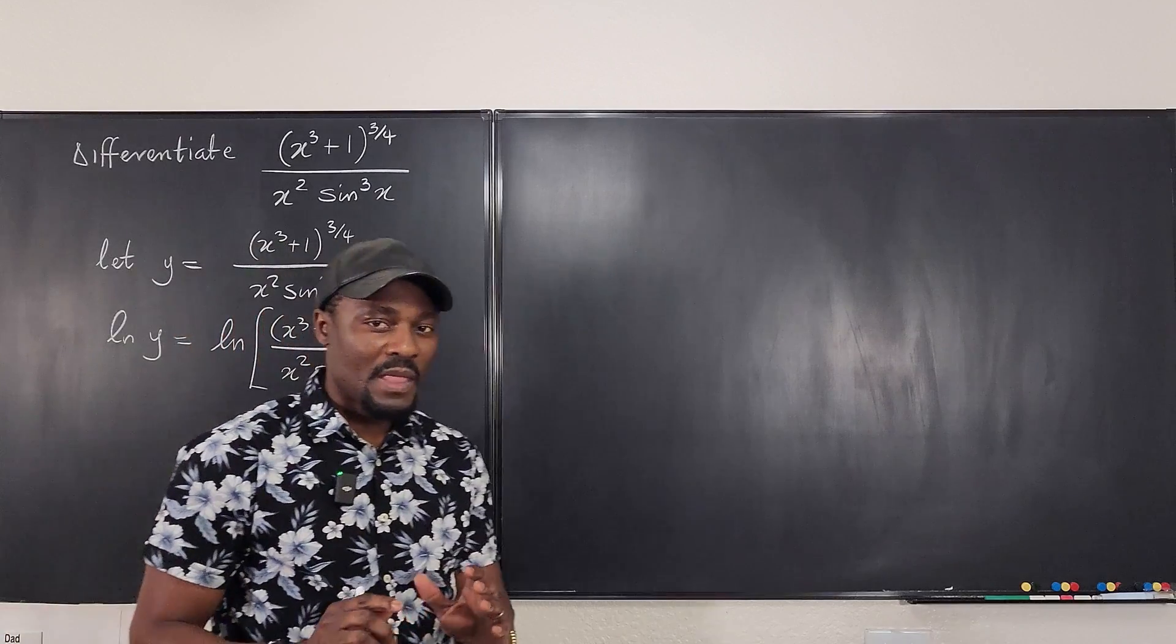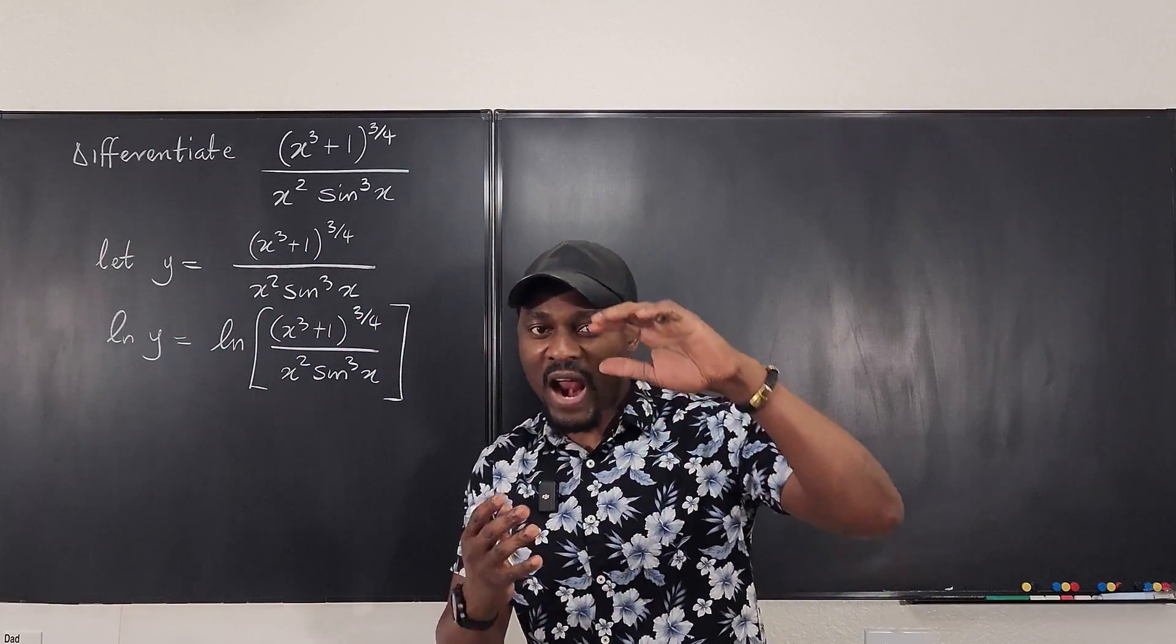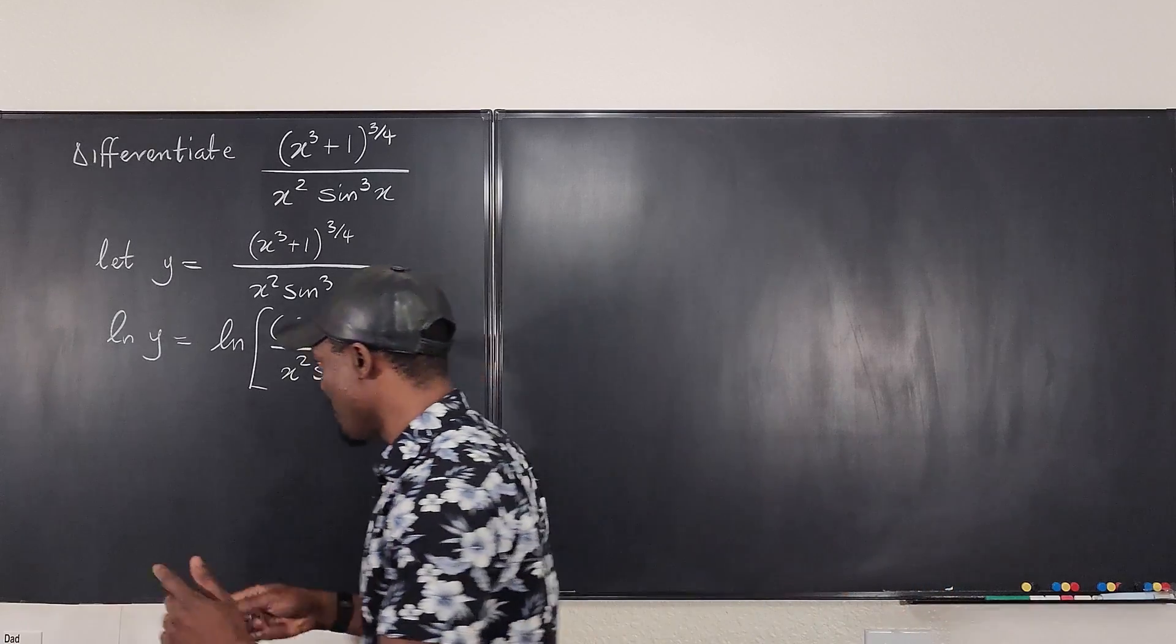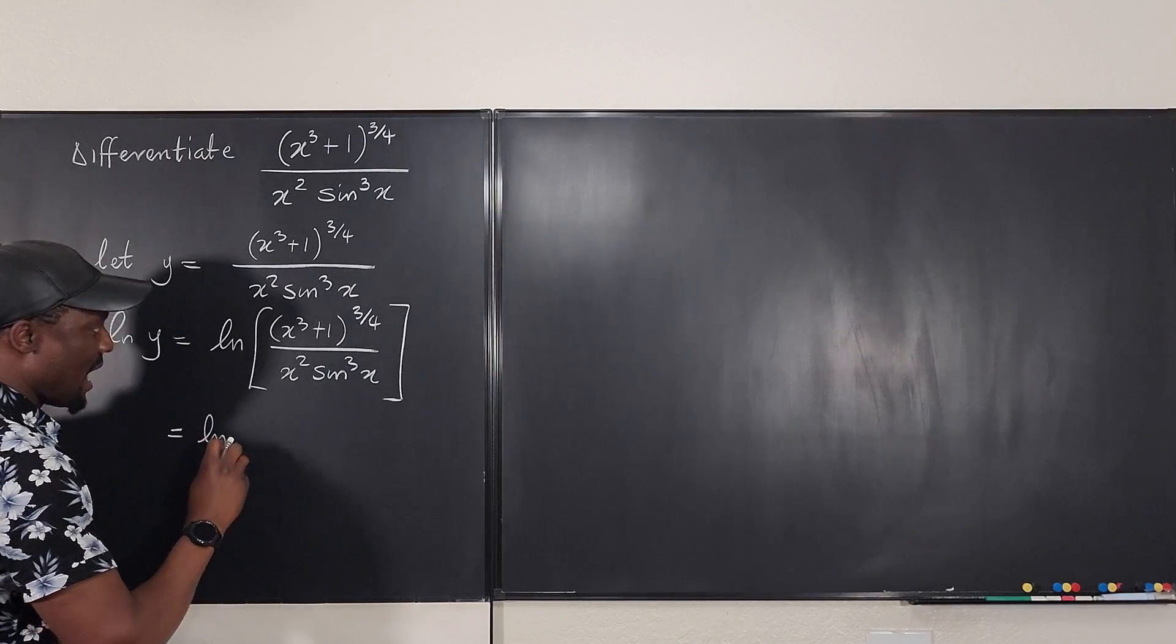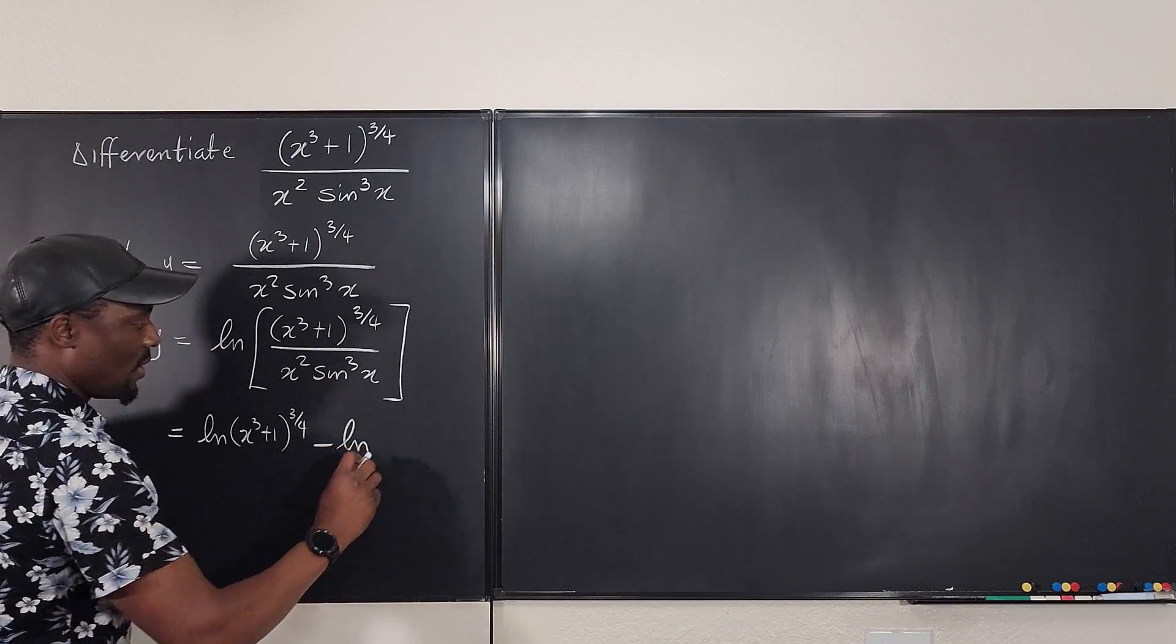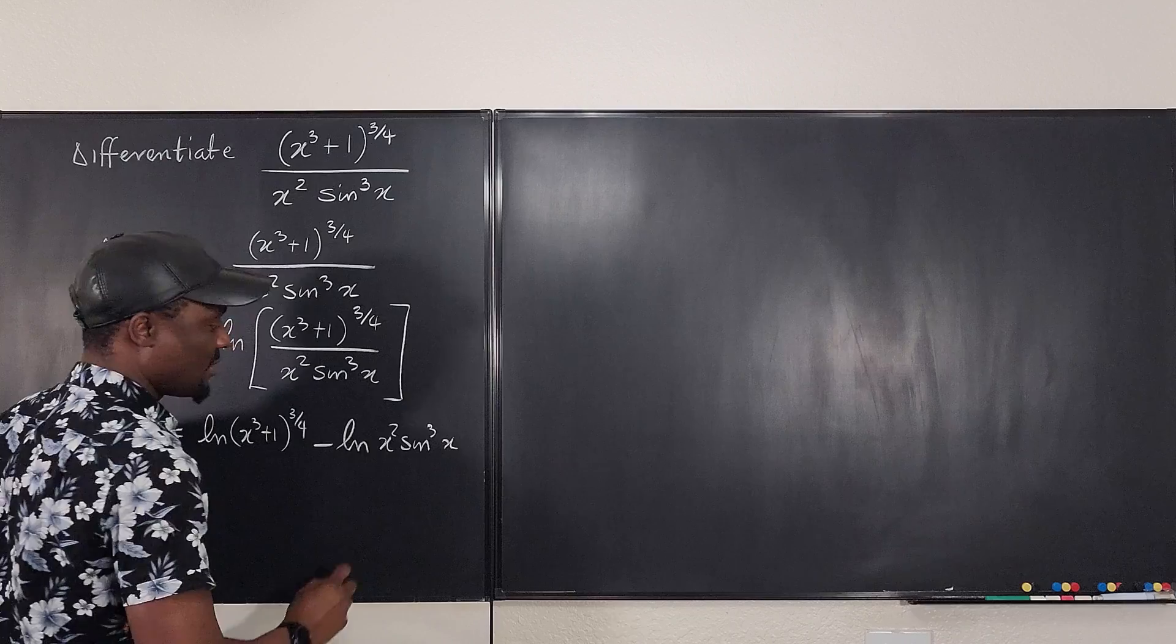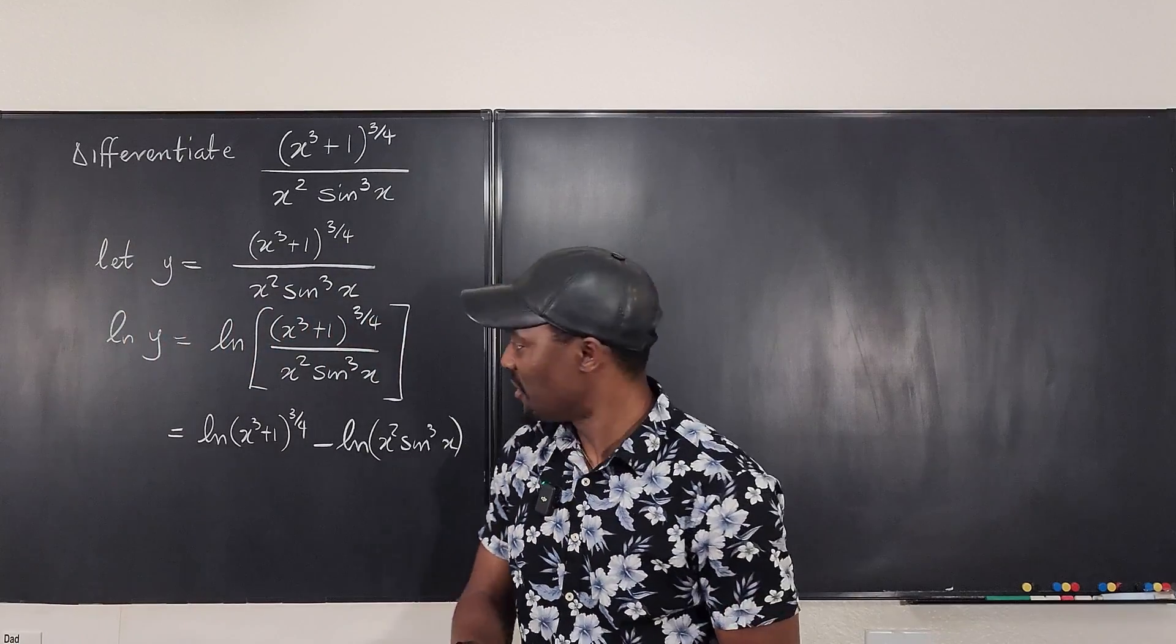But we know that when you have the natural log of a rational expression, you can write it as a difference. So I can say the right hand side could actually be written as the natural log of x cubed plus 1 raised to 3 fourth minus the natural log of x squared sine cubed x. This you learned from pre-calculus or from algebra 2.